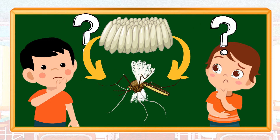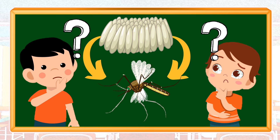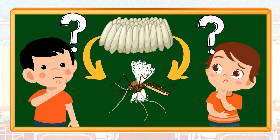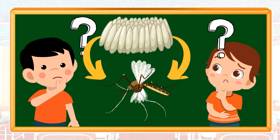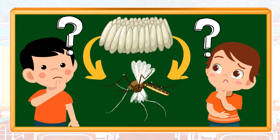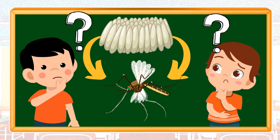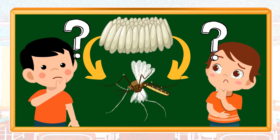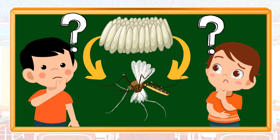Mosquitoes can be found in your house, school, or even in the community. They multiply as fast as they could. Sometimes they bring diseases such as dengue and malaria, which can be deadly for us humans. But have you ever wondered how these insects reproduce? Let's find out!